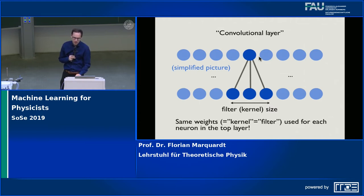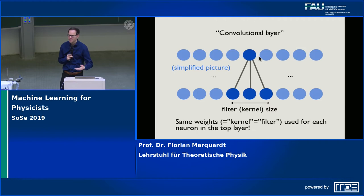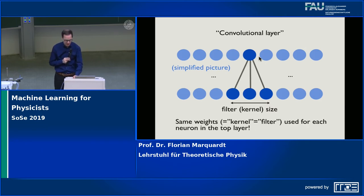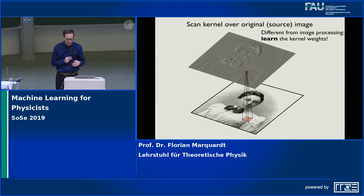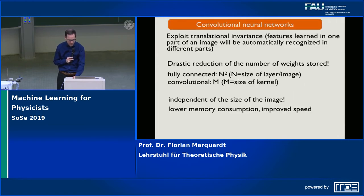It's like playing around with your favorite GIMP filters, but instead of choosing them from a menu, you let them be trained in the usual neural network training way. We will learn the kernel weights — essentially you're scanning the kernel over the original image.